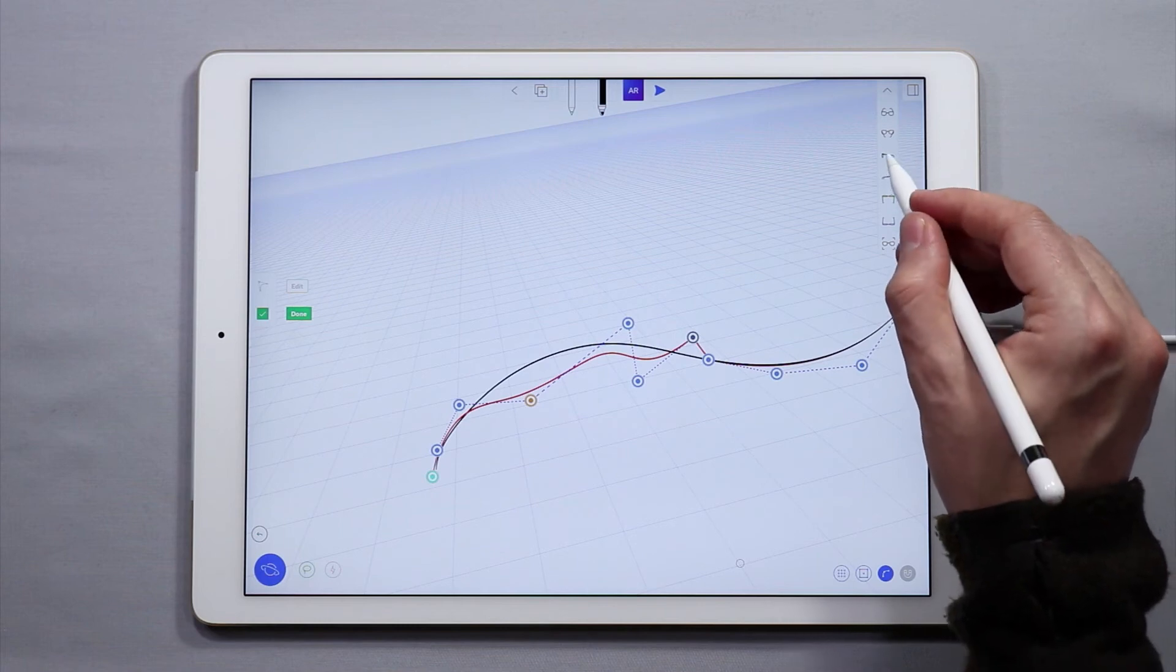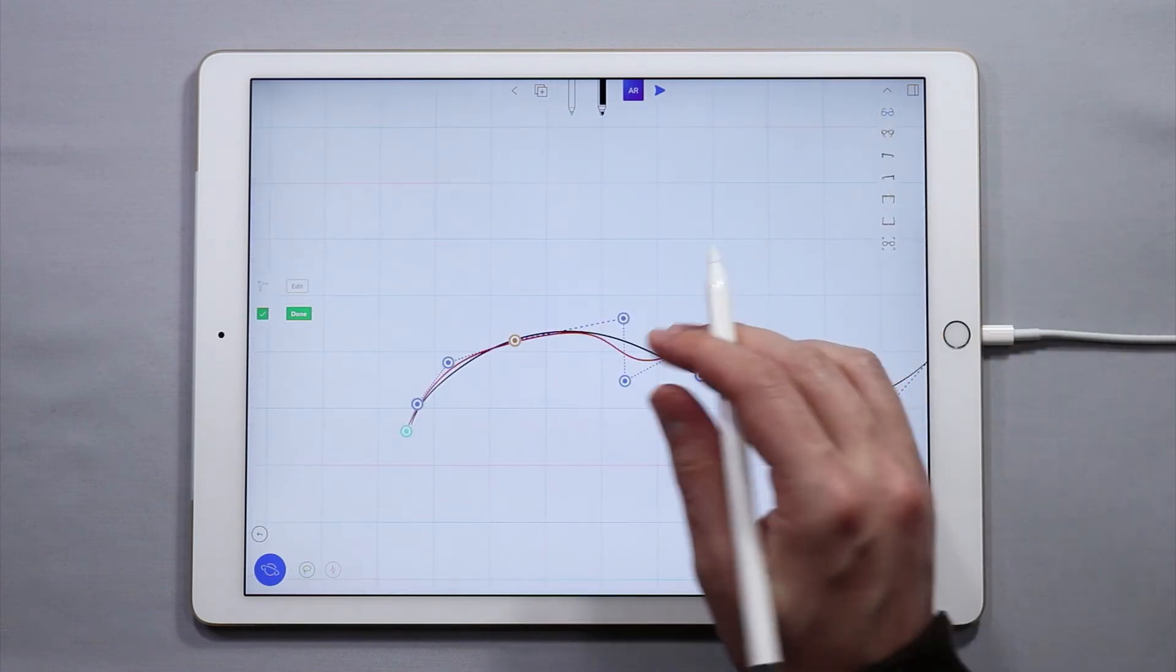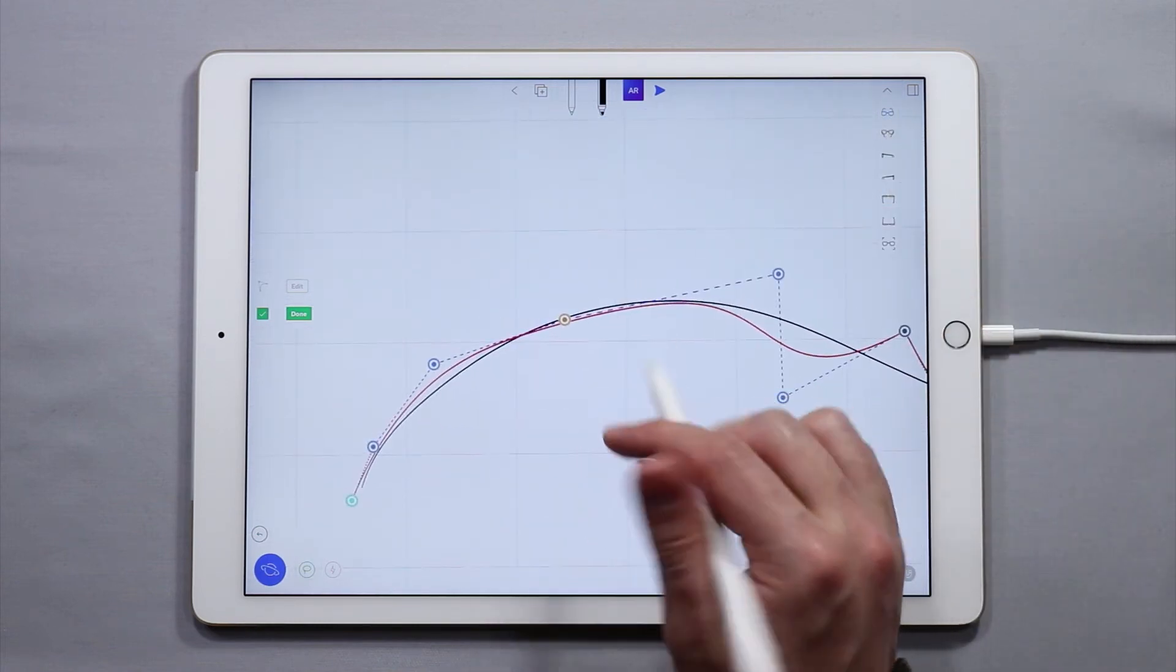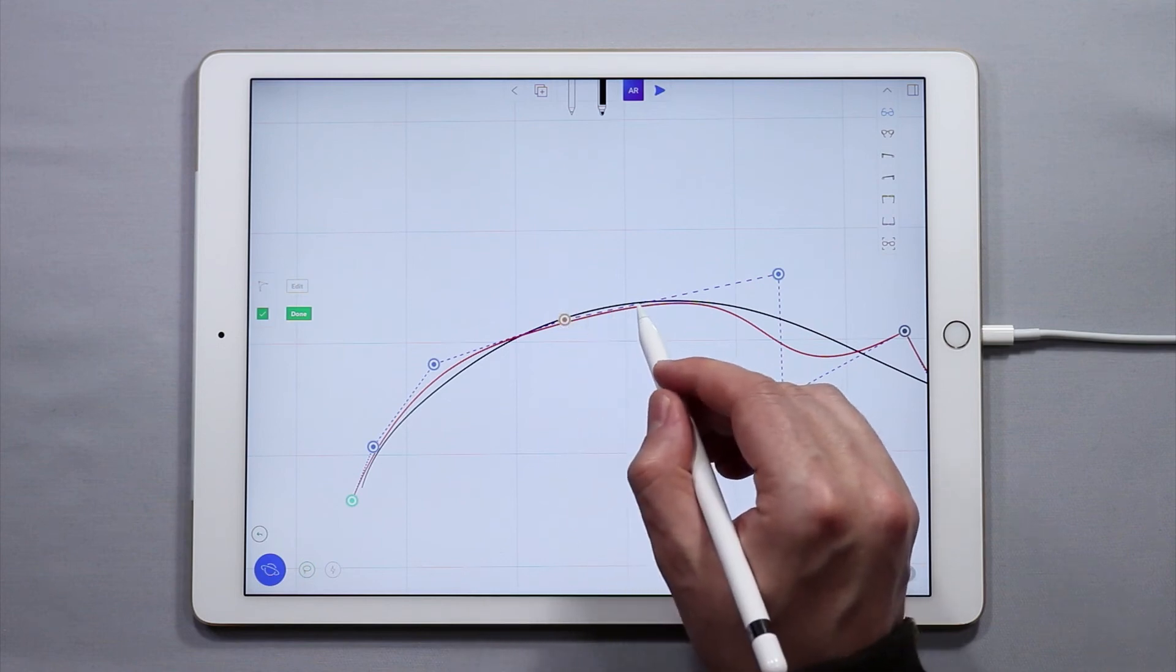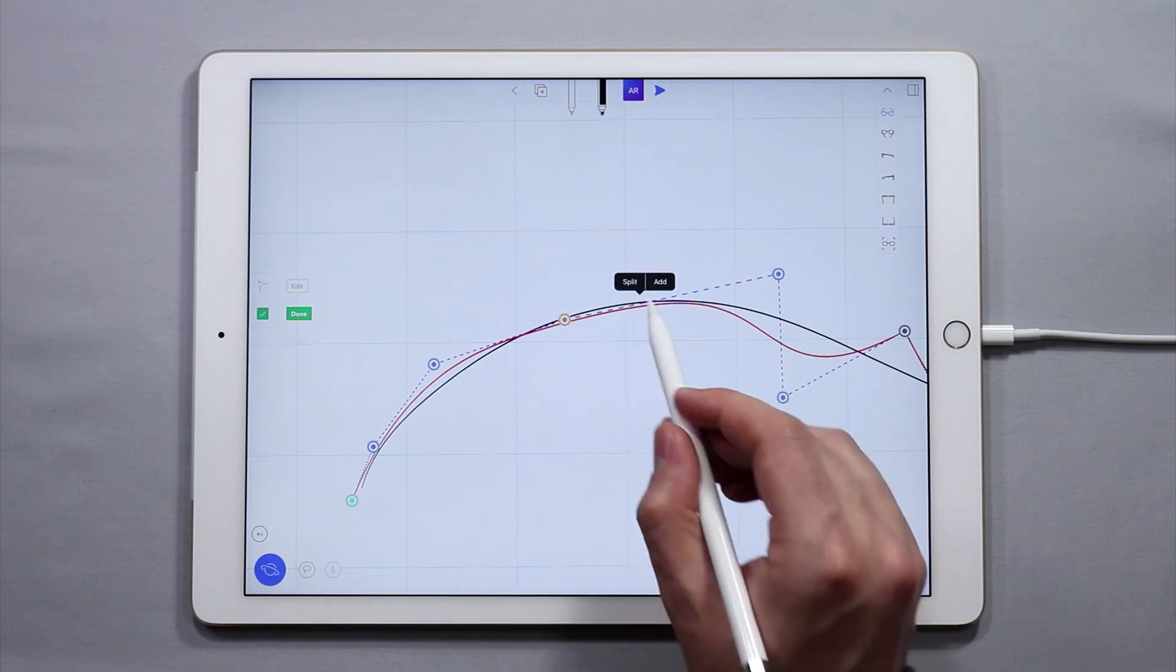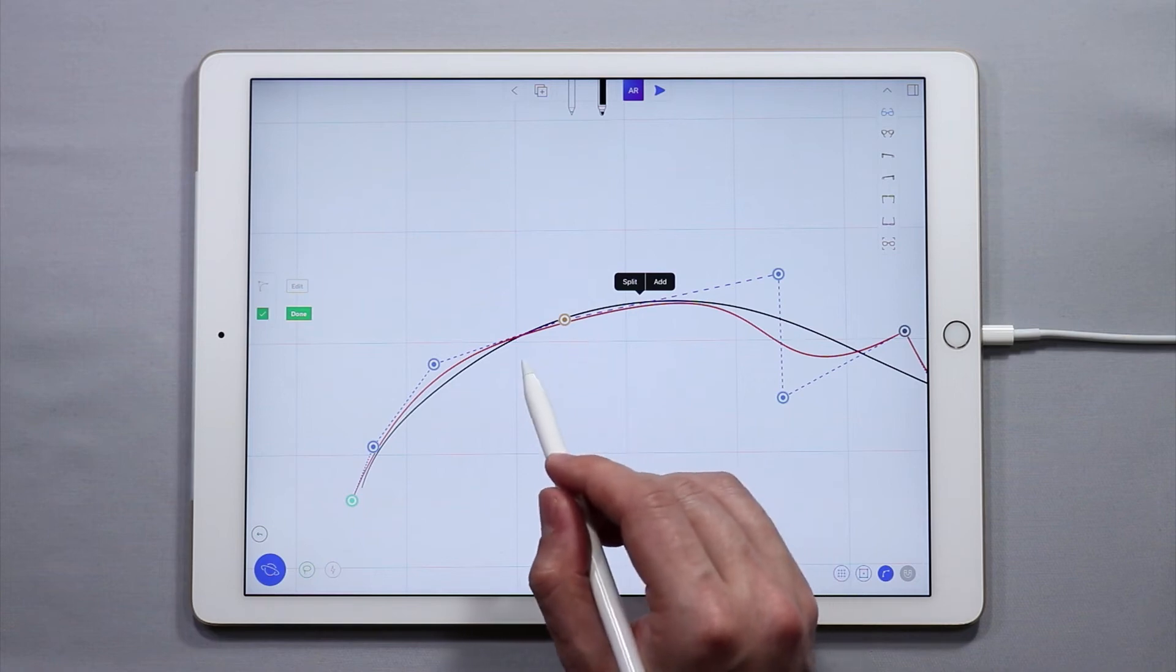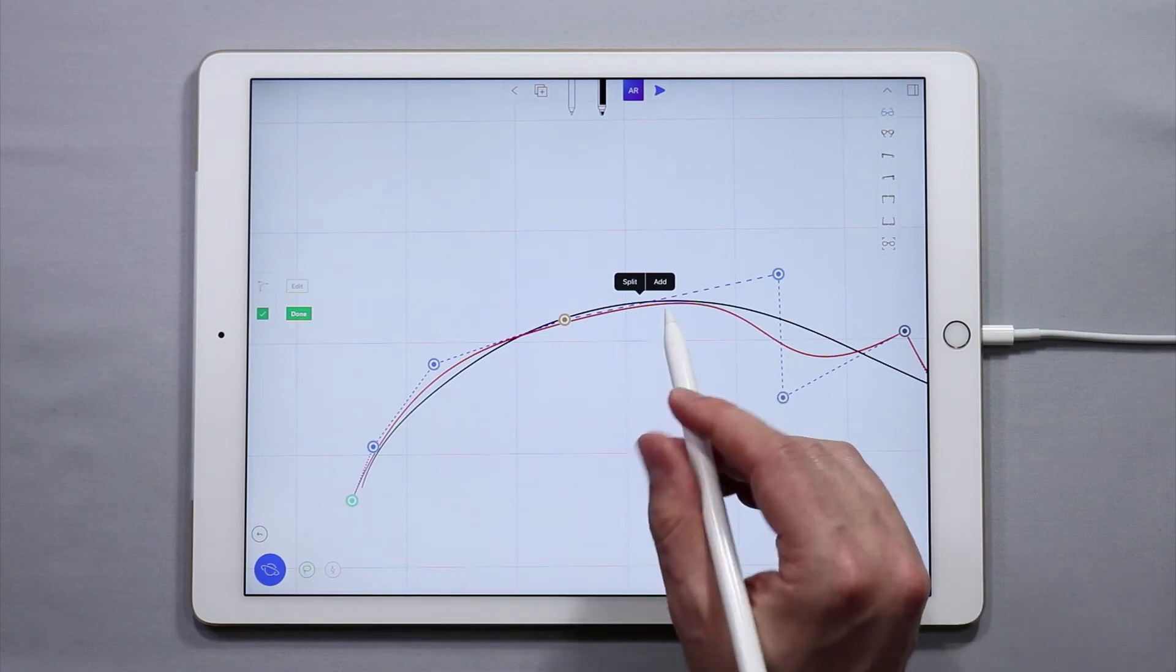Alright a couple more things to note. If I want to split a curve I'm going to tap and hold and I have the option to split it. This will create two separate curves out of one single curve.